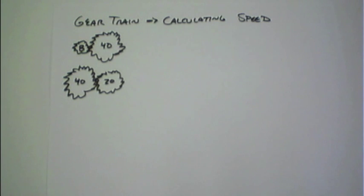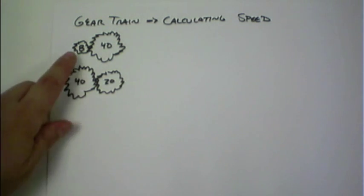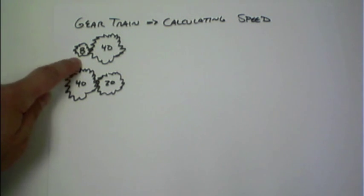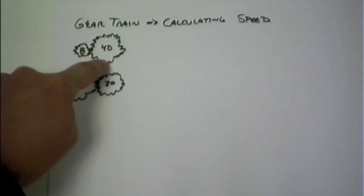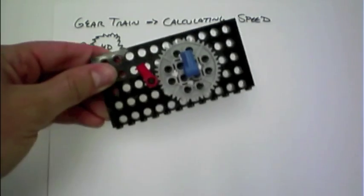Now we're going to look at calculating the output speed of various gear trains. So we were talking about an 8-tooth gear driving a 40-tooth gear, which we saw here.